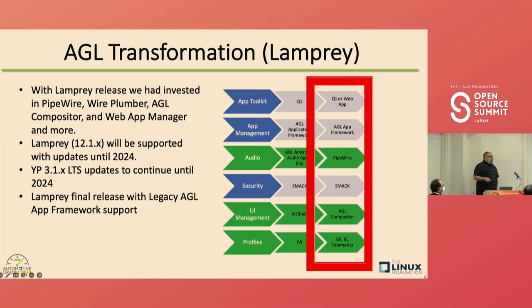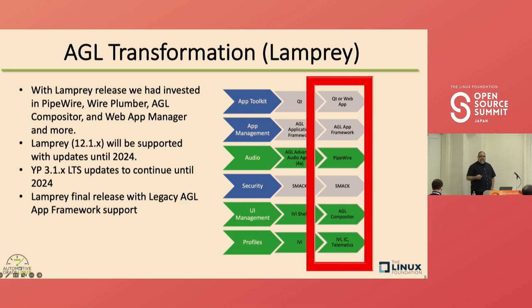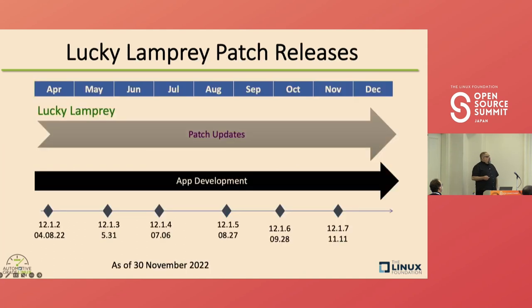When we got to version 12 — Lamprey — we had built up from Tizen and still had some Tizen components, including the AGL app framework based on Murphy and SMAC. That was released in 2021, and we're at 12.1.7 now — our ninth or tenth patch release of Lamprey. We'll continue to do updates of Lamprey until 2024, using the Dunfell version of Yocto, version 3.1, with patch releases following Yocto's roughly six-week cycle.